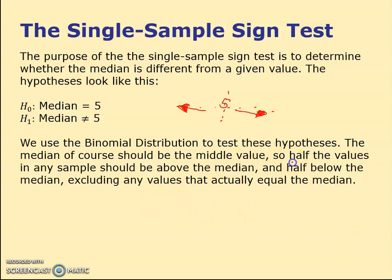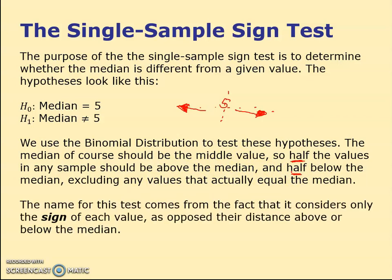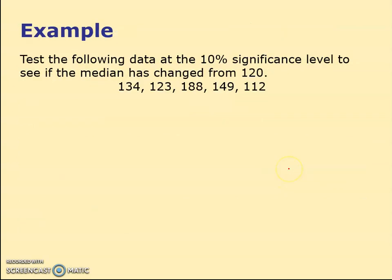We expect half the values should be above the median and the other half below, which seems reasonable. We basically just look at the sign of each value. We don't care how much more than 5 it is - if it's 5.1 or 5 billion, it's still above. We're just counting how many above, how many below.